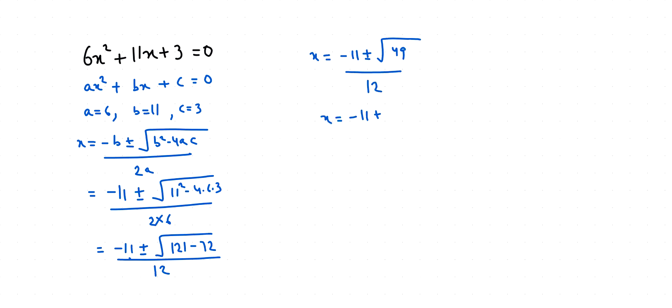So x₁ = (-11 + 7) / 12 and x₂ = (-11 - 7) / 12. So x₁ is -4/12 that is -1/3 and x₂ is -18/12 that is -3/2 if we divide it by 6.